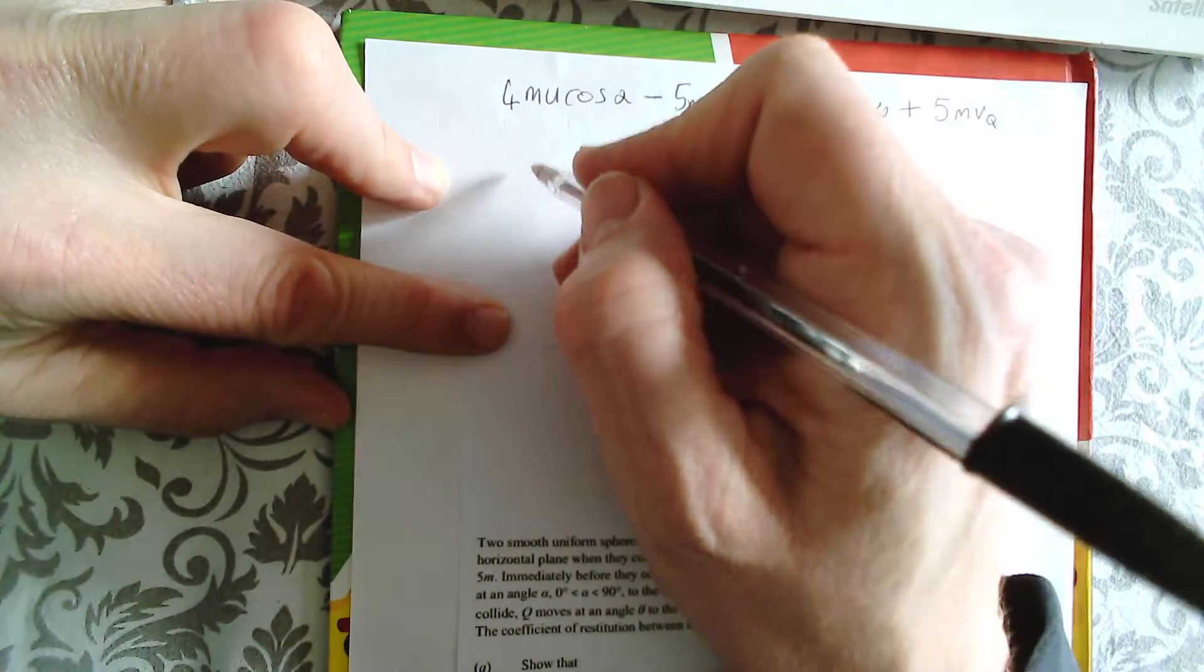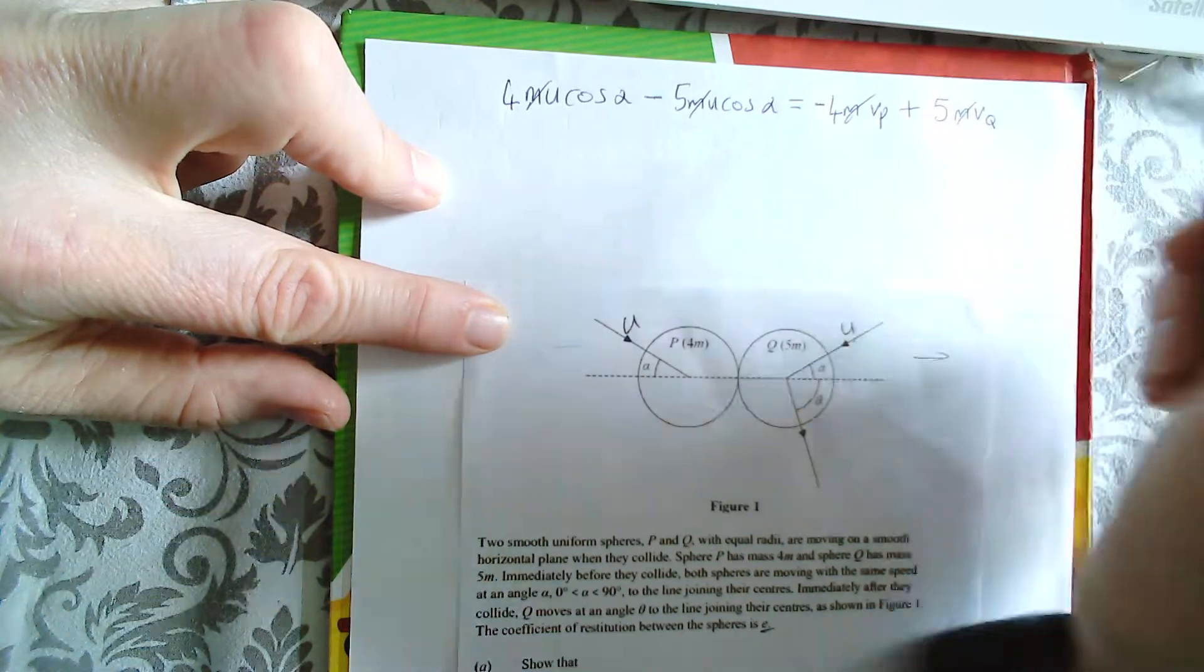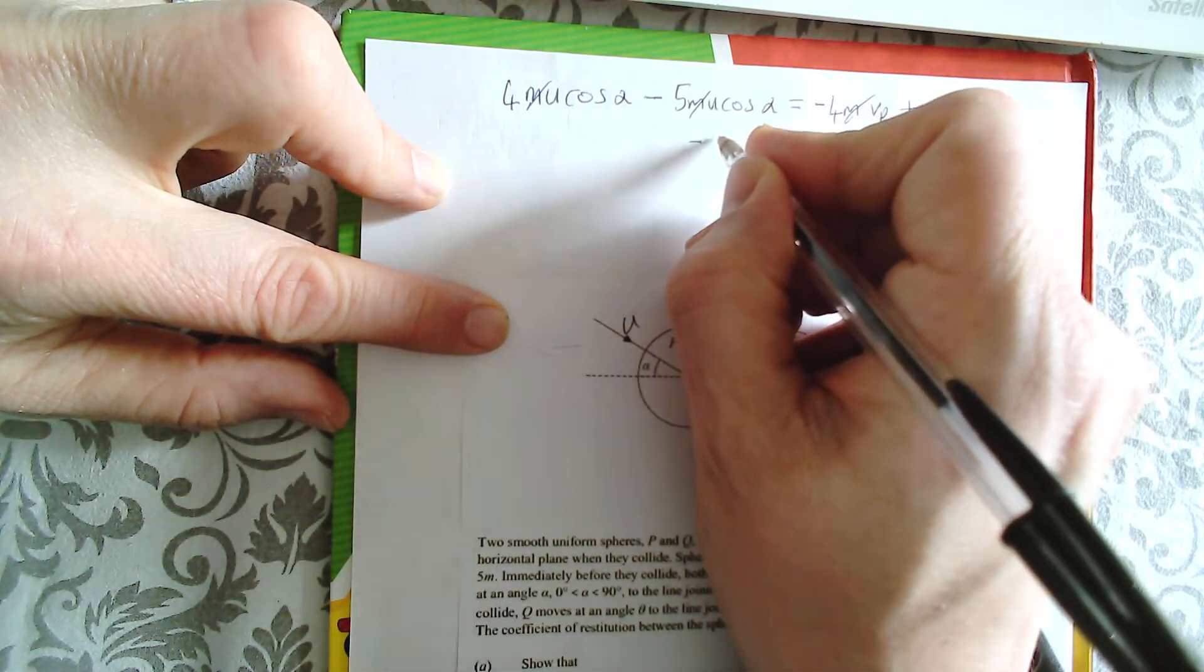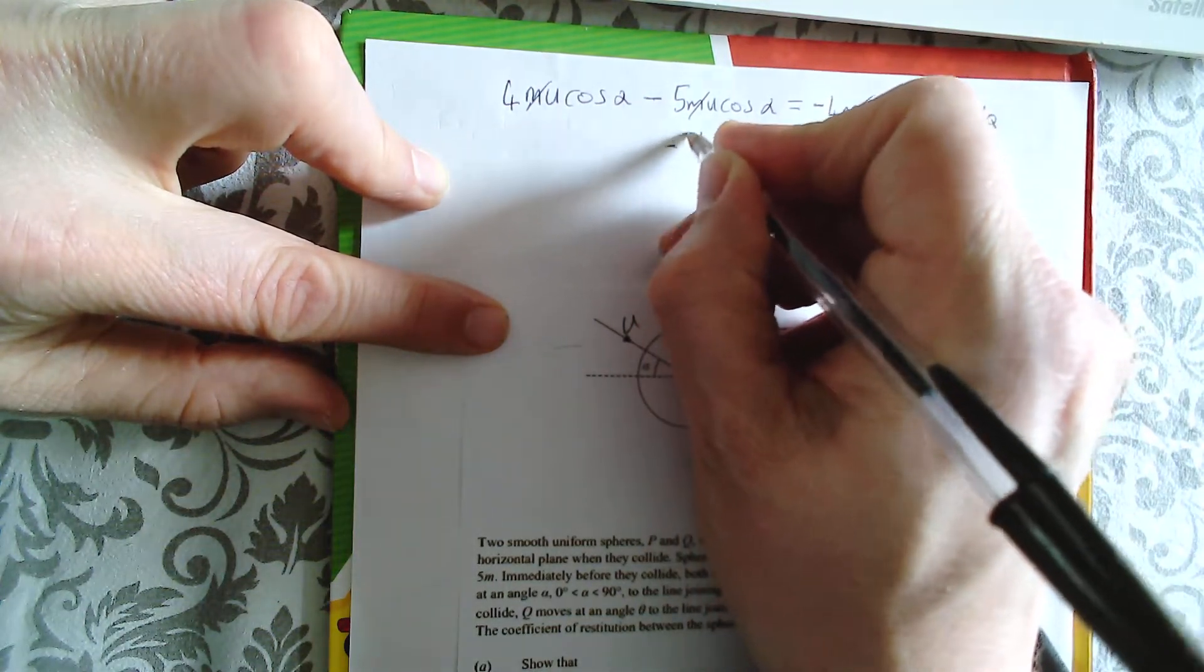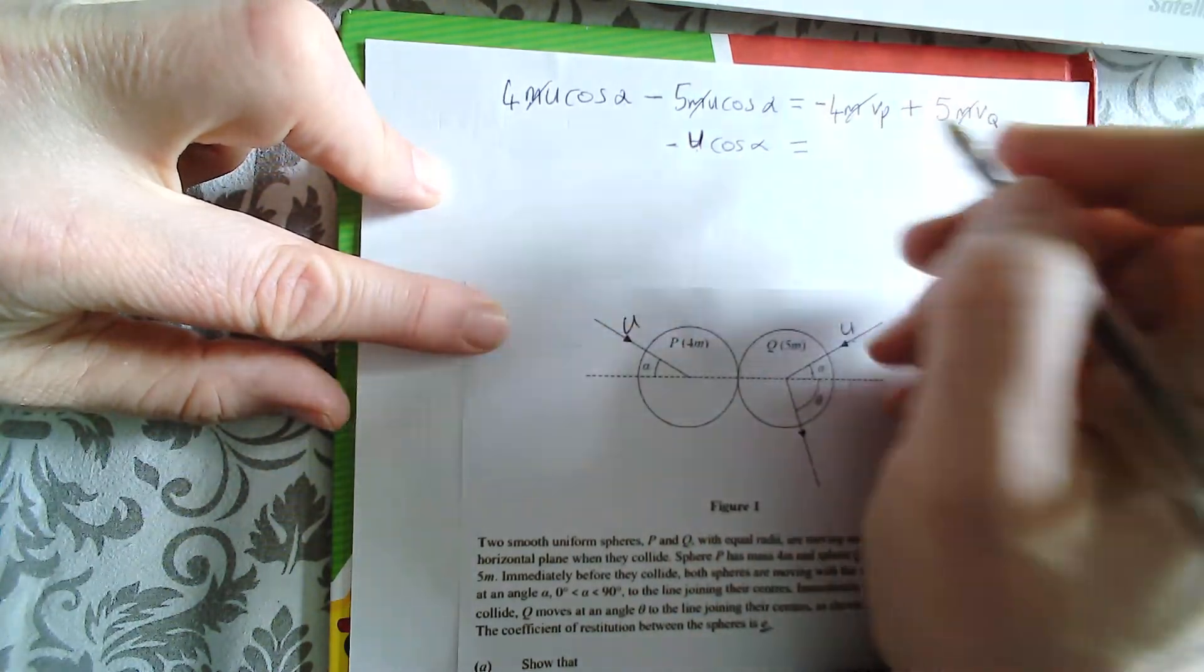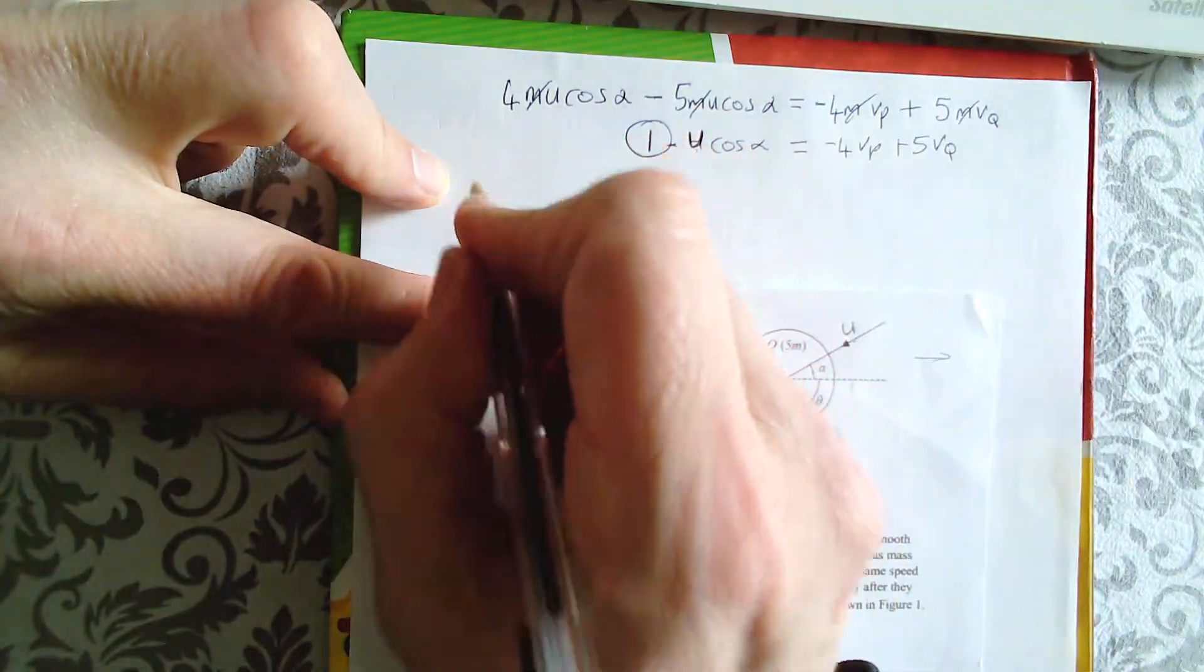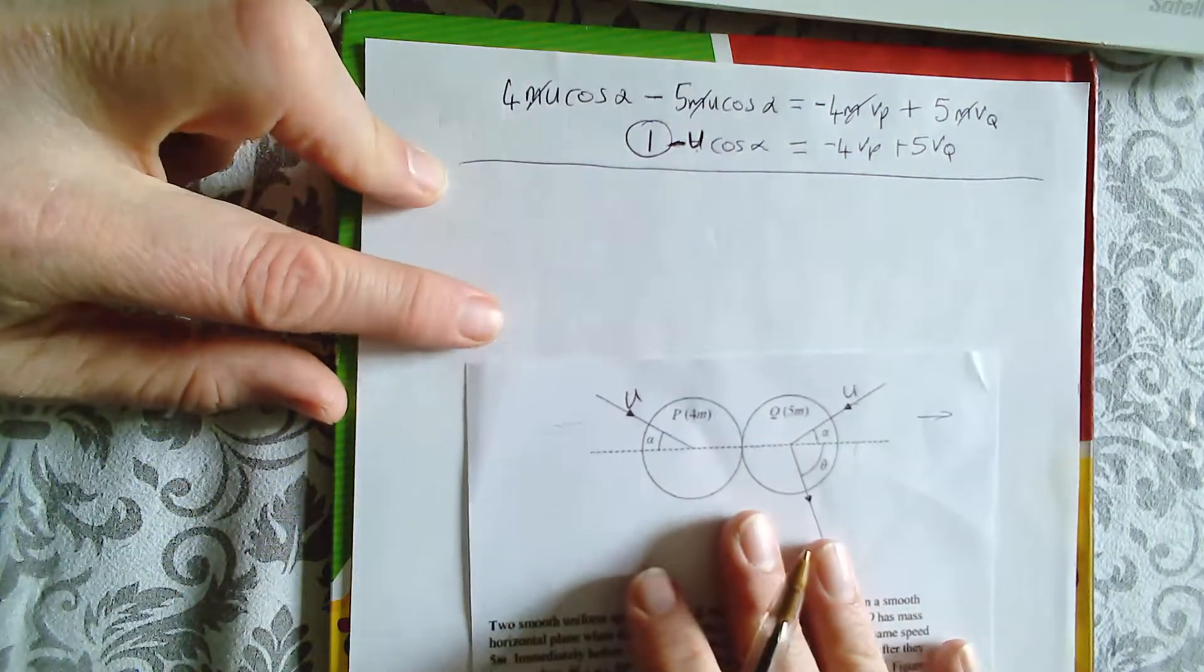Well, there's a lot of M's there. M's often cancel out in these type of questions. So we can tidy it up a bit. So we're going to get 4 cos alpha minus 5 cos alpha is negative cos alpha. And I shouldn't forget the U there, sorry. Can't forget that U. Otherwise, this would all fall apart. And then I've got negative 4 Vp plus 5 Vq. And I'm going to call that equation 1. And there's a reason for that. I don't want to lose that negative sign. I'll be forming a simultaneous equation.